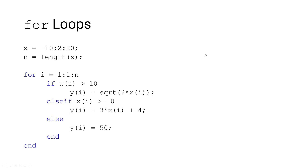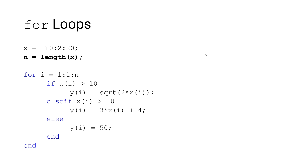First, we're going to initialize our variable x, which in this case is a row array with a starting value of negative 10, a step value of 2, and a final value of 20. Next, we count the number of elements in our array with the length function. In this case, our row array x has a total of 16 elements.